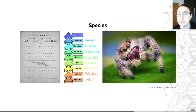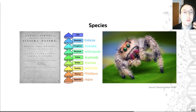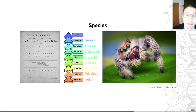An important concept to highlight is the concept of a species. Life can be thought of as a series of hierarchically nested groupings, first defined by a Swedish gentleman called Linnaeus several hundred years ago.